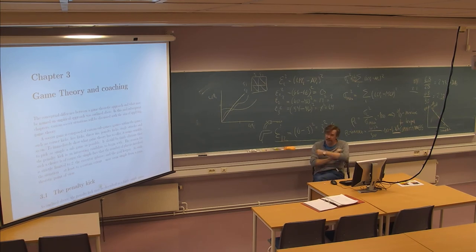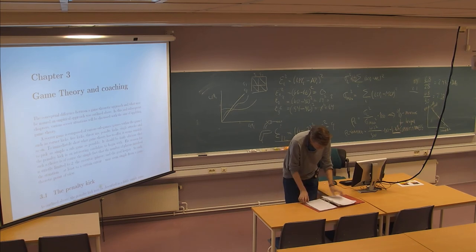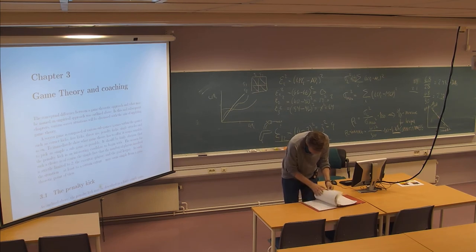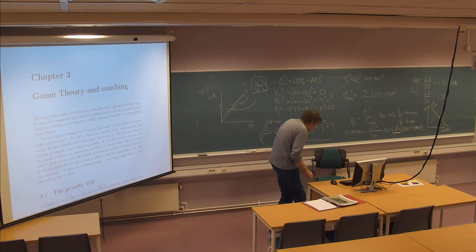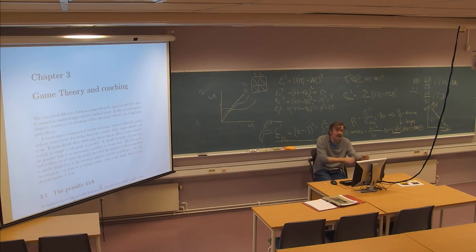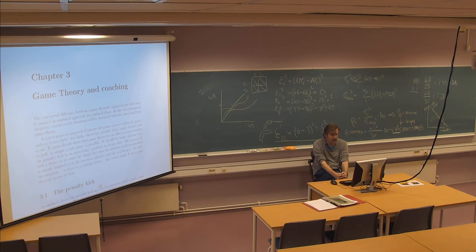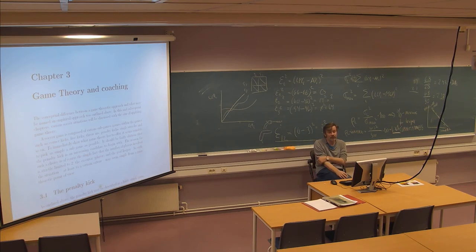We'll look into chapter three, which is named 'Game Theory and Coaching,' and we will start with the penalty kick. In that game there are more or less two obvious players: the person who takes the penalty kick — the executor — and the goalkeeper who tries to save it. The ball is placed at 11 meters.